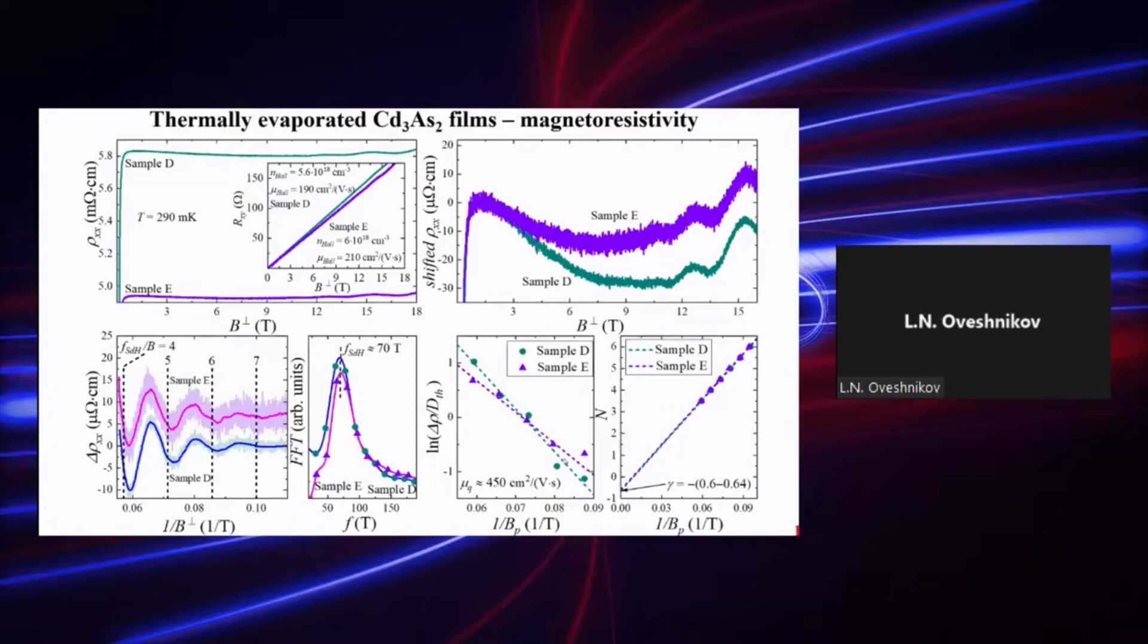Basically, these two samples, while having considerable difference in normal state resistivity, they both show the very same oscillation spectra with frequency of about 70 tesla.